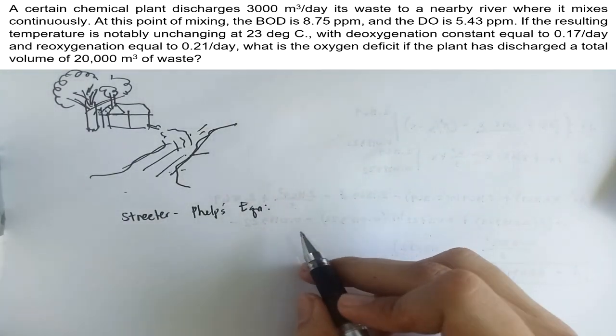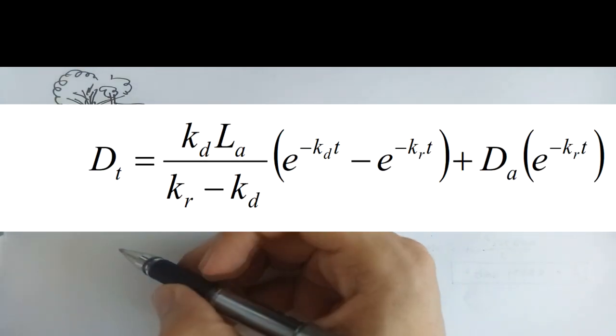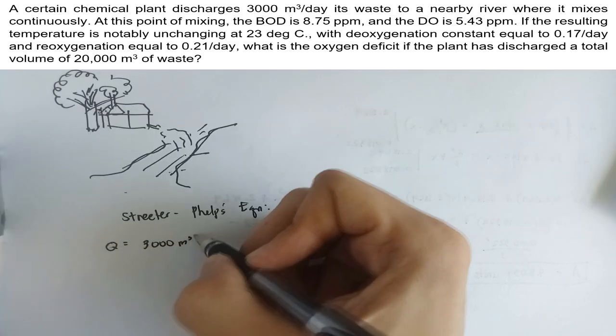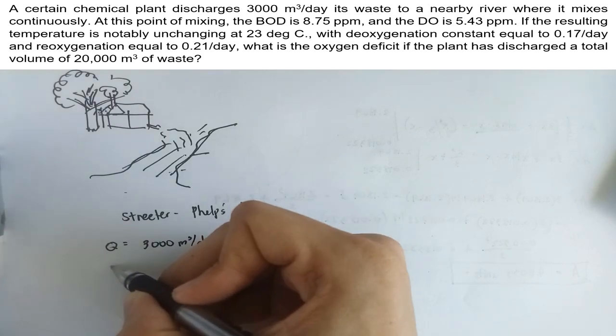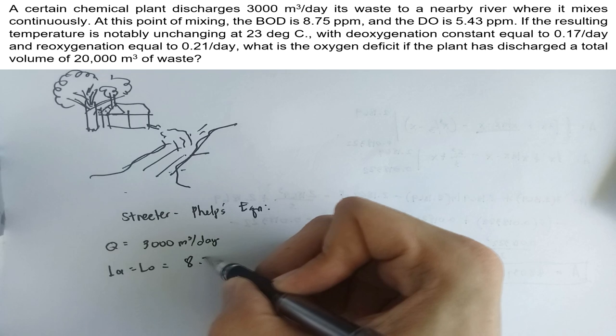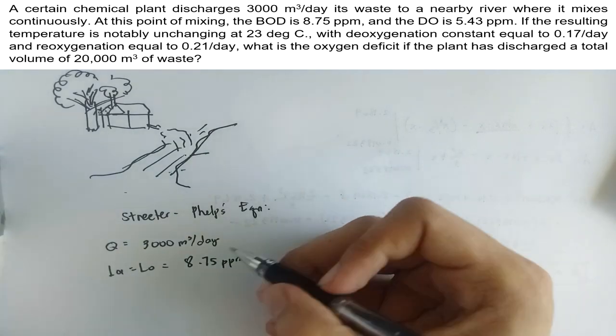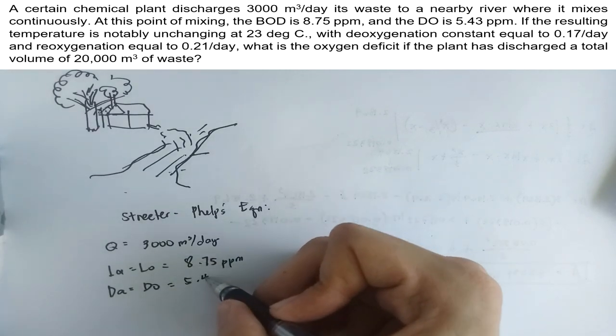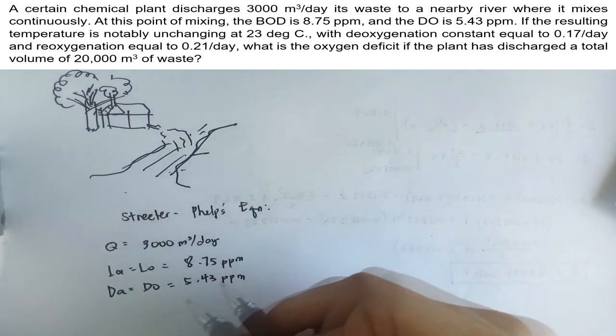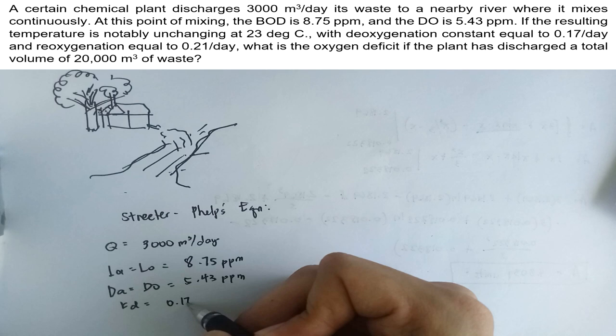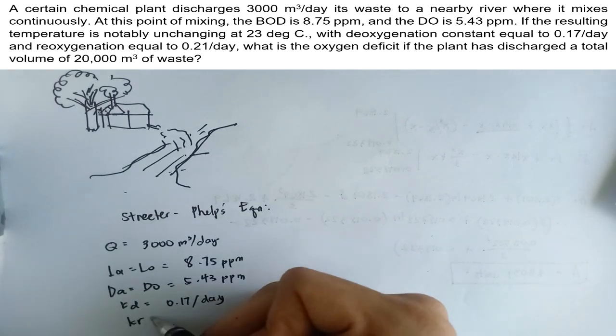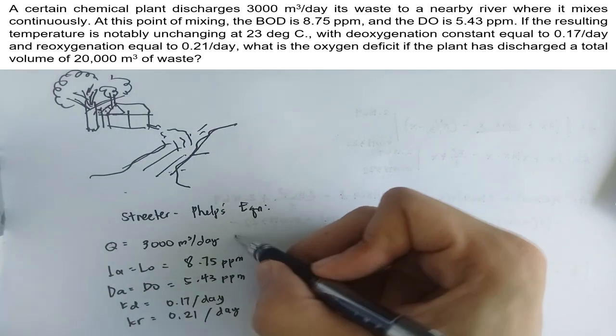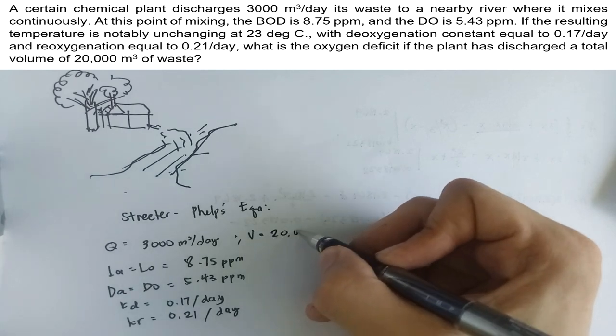This kind of problem involves the Streeter-Phelps equation, which gives us the oxygen deficit at any time T. Let's write the given. The flow rate of the company is 3,000 cubic meters per day. At the discharge point, BOD, or simply the ultimate BOD, is equal to 8.75 parts per million. At the point of mixing, we have the dissolved oxygen as 5.43 ppm. The deoxygenation constant is 0.17 per day and the reoxygenation constant is 0.21 per day. The volume discharged is 20,000 cubic meters.